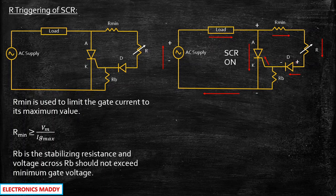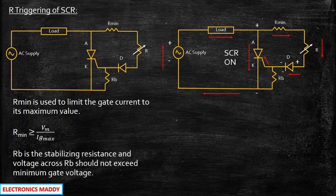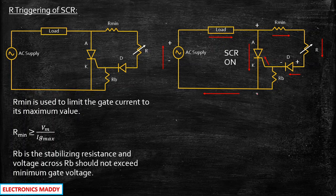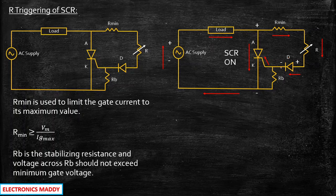The diode is required for one important purpose. During the negative half cycle, the supply polarity reverses to minus and plus. At that point, the diode acts as an open circuit and no gate supply is given to the gate terminal of the SCR. Because the anode is negative and cathode is positive during the negative half cycle, even if you give the gate supply the SCR will not turn on. That is why a diode is used so that only during positive polarity of the supply, current is given to the gate terminal. This is a very important point.